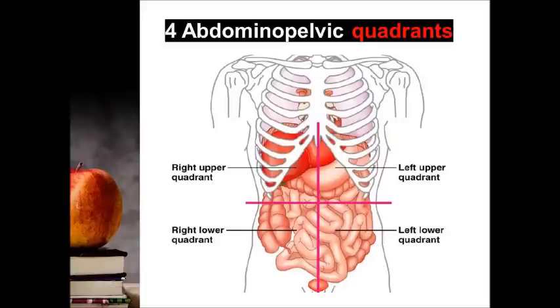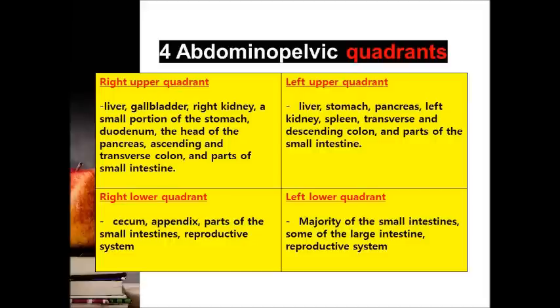There is also terminology for abdominopelvic quadrants. The quadrant can be divided into four: right upper and lower, left upper and lower. There are specific organs according to the four divisions of abdominopelvic quadrants, and you may need to carefully identify them.